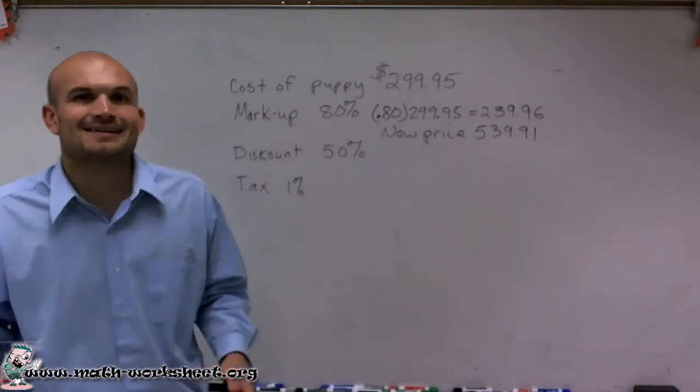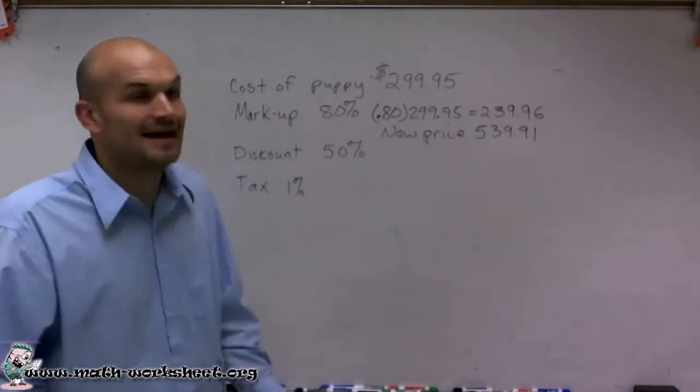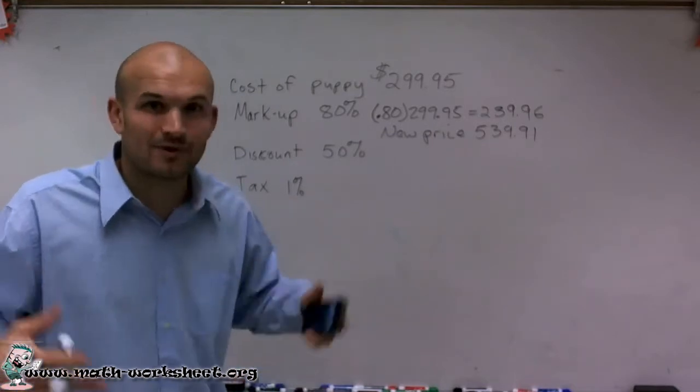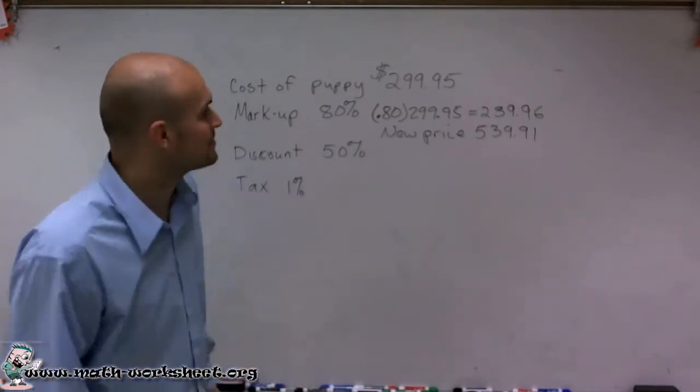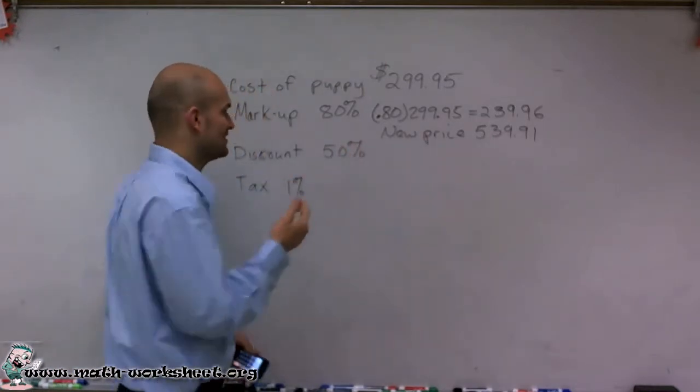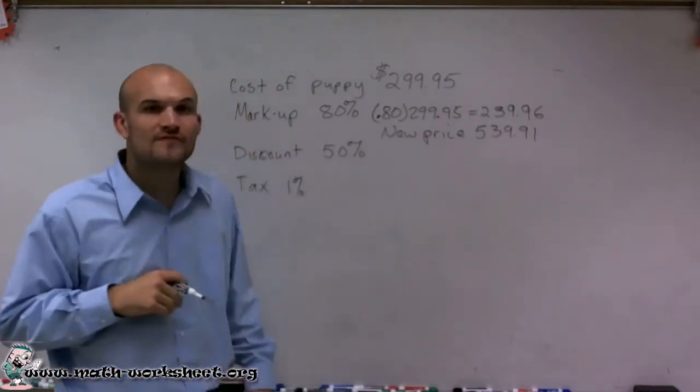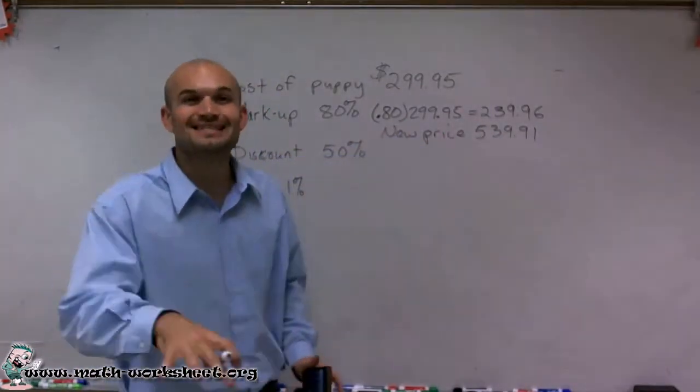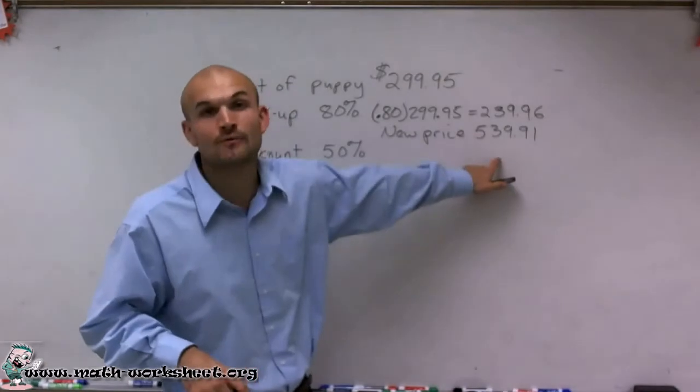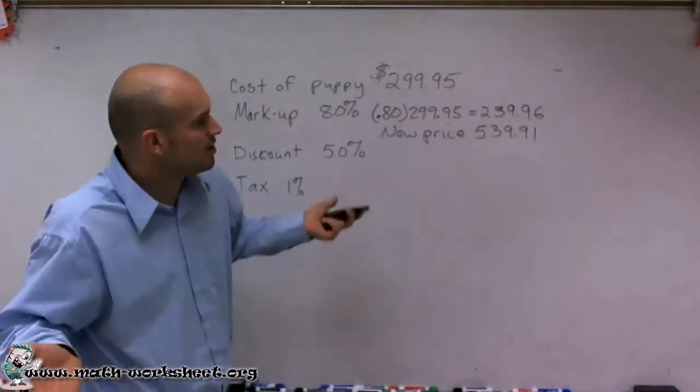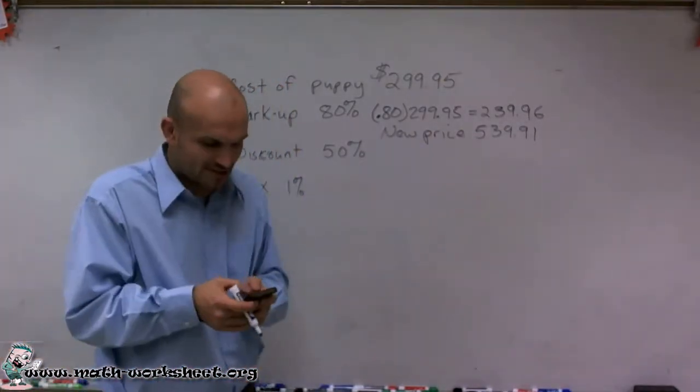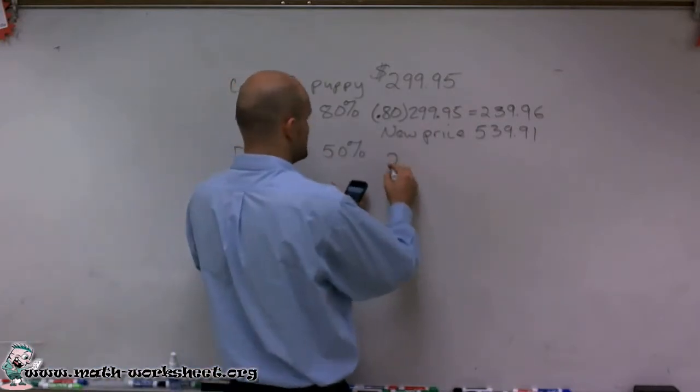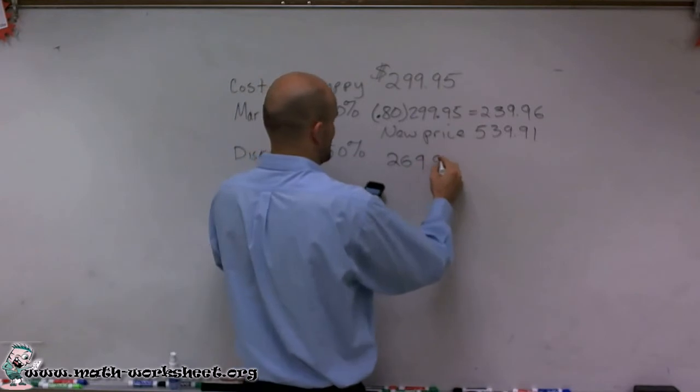Now let's say they have too many of these puppies so they got to make a quick sale over the weekend, right? It's kind of like one of those, if you buy now you get this. So let's say for today only they're going to give you a discount of 50%. Now it's already been marked up and now what they're going to do is just take a discount of 50% of the new price. So you can just multiply by 0.50 or divide by two, and I'm going to get my new price of $269.95.